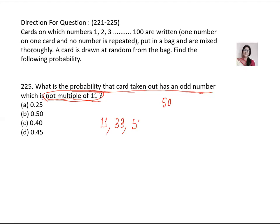Next we will go for 55. Then next I will go for 77. Next I will go for 99. How many are there? 5. So this 5 will be taken out from 50. So 50 minus 5, that will be 45.